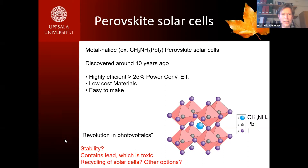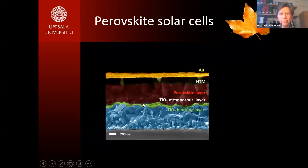As shown in Fanny's presentation, stability is the main problem with perovskite solar cells. Another problem is that they usually contain lead, which is a toxic element. Therefore one has to think about recycling or replacing lead with other metals. In the structure of the perovskite solar cell, we have an N-type semiconductor on one side and a P-type semiconductor on the other side of the perovskite.